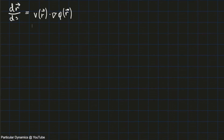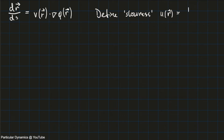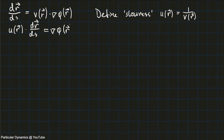Here we have the kinematic ray equation. For convenience, I'll define a new term, and I'm going to call that new term slowness. By that I will get a function which I call u, and the value of that is the inverse of the speed of light. By using this definition, our kinematic ray equation becomes the following. I'll label this result number one, because I'll have to get back to it later.